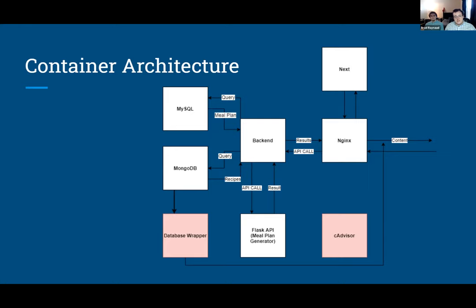The MySQL table stores individual meal plans for each user because it's easier to store that as a row rather than a document. In the bottom portion you can see two containers in red — these were removed when we moved to production deployment. We removed both the database wrapper and the seed advisor container. The database wrapper was a web interface to look at our MongoDB data, and once testing was done we removed it. The seed advisor was our profiler for the first few sprints, but DigitalOcean performed those roles once we deployed there.